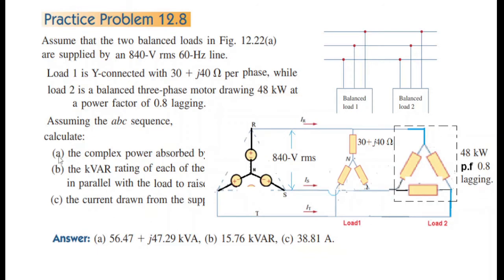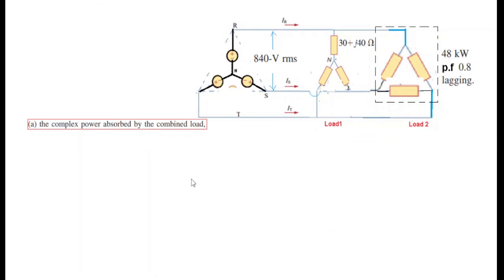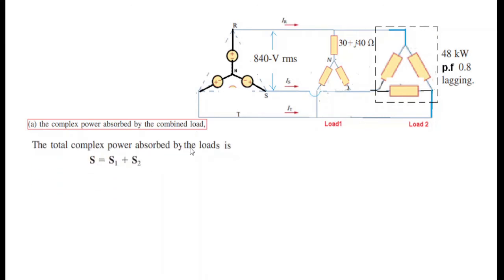With this information I can calculate the required parameters. The total complex power S equals S1 plus S2, where S1 is power consumed by load one and S2 is power consumed by load two.